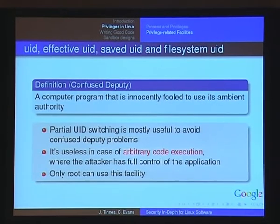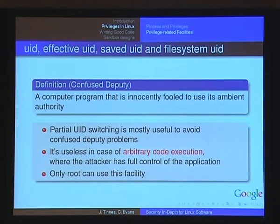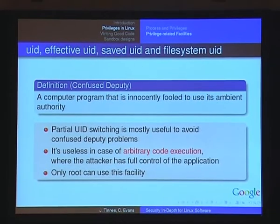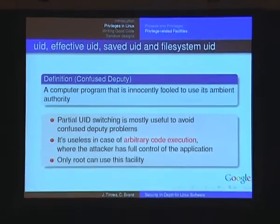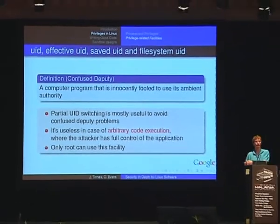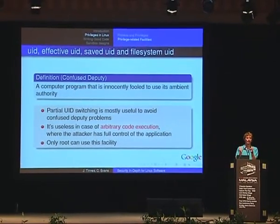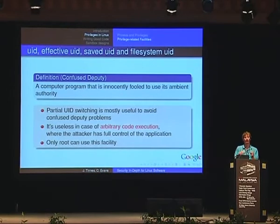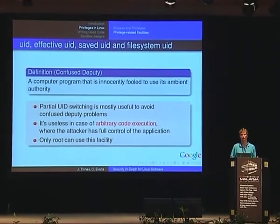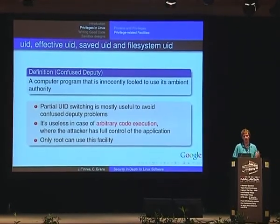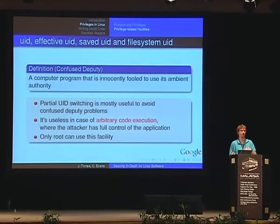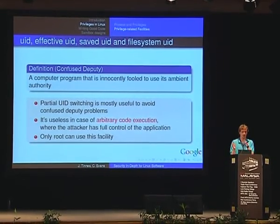Partial UID switching is mostly useful to avoid confused deputy problems, but it is completely useless in the case of arbitrary code execution, when an attacker has complete control over your process. If your process can revert back and regain its privileges, so can the attacker who controls your process. Only root can use this facility of switching UIDs.